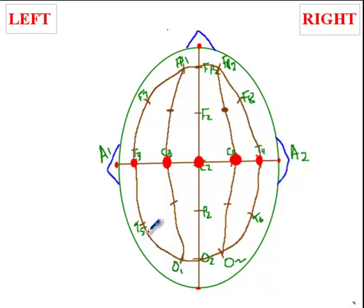Then you do some transverse measurements. What you do is, you draw a line from F7 to F8, crossing through Fz. And now, you have confirmed locations of few electrodes. So, you have F3, and you have F4.